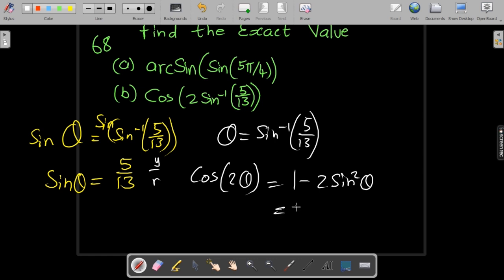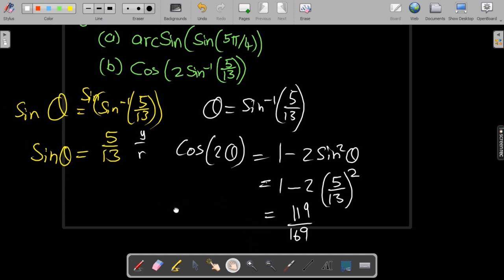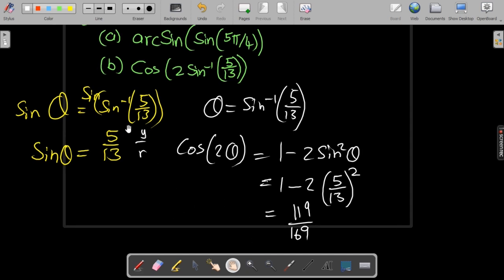You can go ahead: 1 minus 2, and your y is 5, your r is 13, and you square that. When you work this out, you get 119 over 169. So it's totally up to you. You can either go for this method, which is quite direct, or you can first find your x to use any of the other two forms of your double angle identity that has cosine.